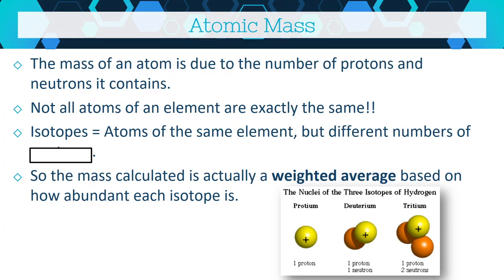The mass of an atom is due to the number of protons and neutrons in it, but not all atoms of an element are exactly the same. Sometimes you have different isotopes. The word 'isotope' comes from Greek: 'iso' meaning same and 'topos' meaning place. Isotopes are atoms of the same element — they have the same number of protons — but they have different numbers of neutrons and different mass numbers. Since they're the same element, they occupy the same place on the periodic table. Carbon-12, carbon-13, and carbon-14 are three isotopes of carbon.